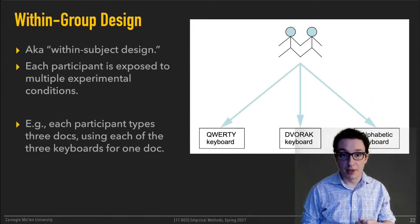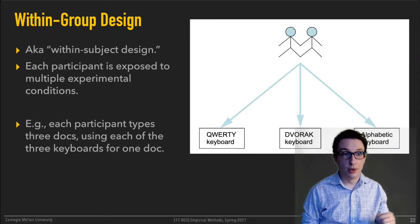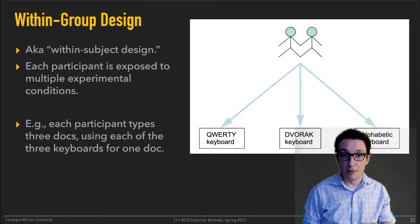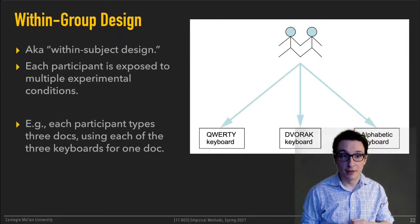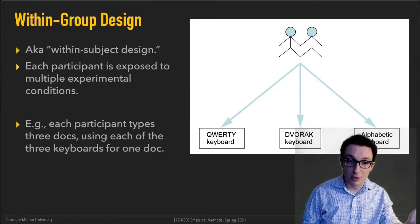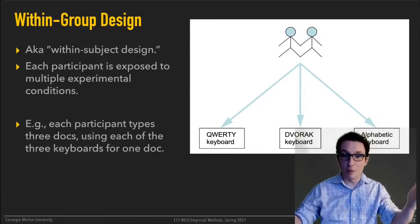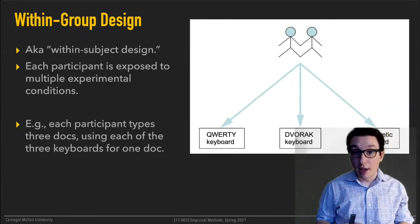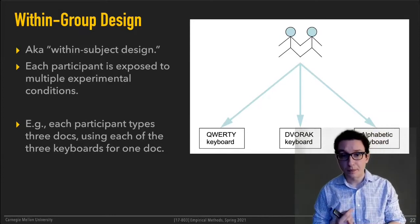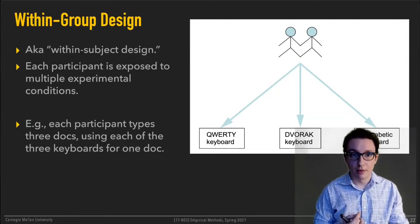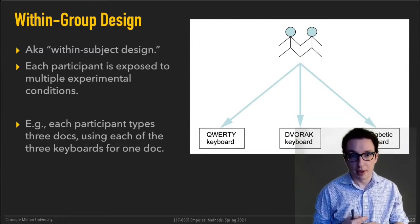The within-group design, also called within-subject design, is where you expose the same participants to multiple conditions, multiple treatments. In the keyboard example, every participant would have to type three documents — one using each of the three keyboards you're studying. This is the main distinction between experiment designs: between-group or within-group. If you remember this one thing, you've remembered most of what there is about designing experiments.